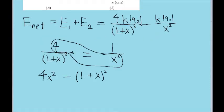So multiplying 4 by x squared, we get 4x squared on the left. And then multiplying, bringing L plus x squared to the top, we just get that on its own on the right. Now let's get rid of the squared terms by taking the square root of both sides. And now to solve for L, we just subtract x from both sides, and L will be completely on its own.